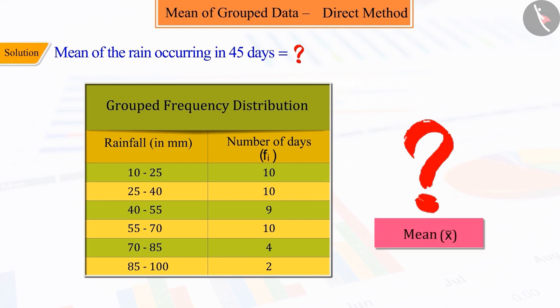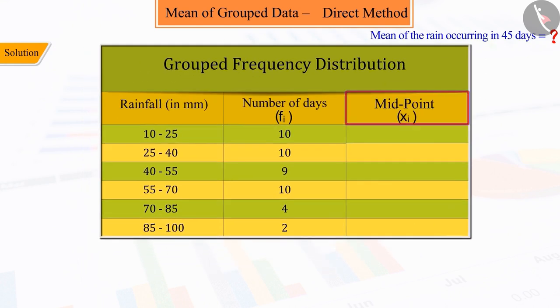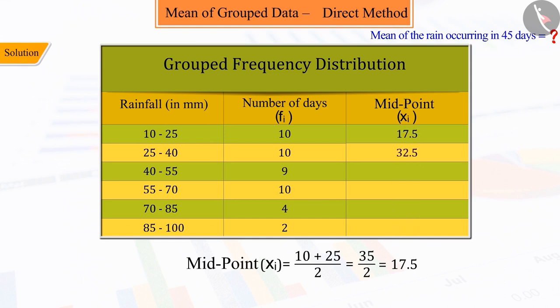Correct. To find the mean, we first find the class mark or the midpoint of each class interval, which is denoted by x_i. To obtain the mean, multiply all these midpoints with their corresponding frequencies.